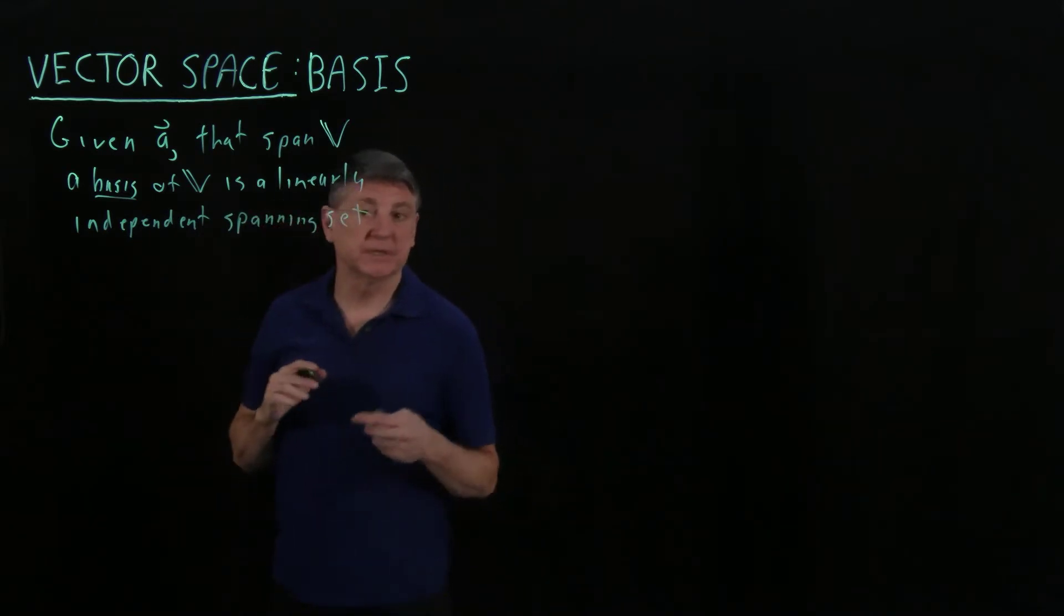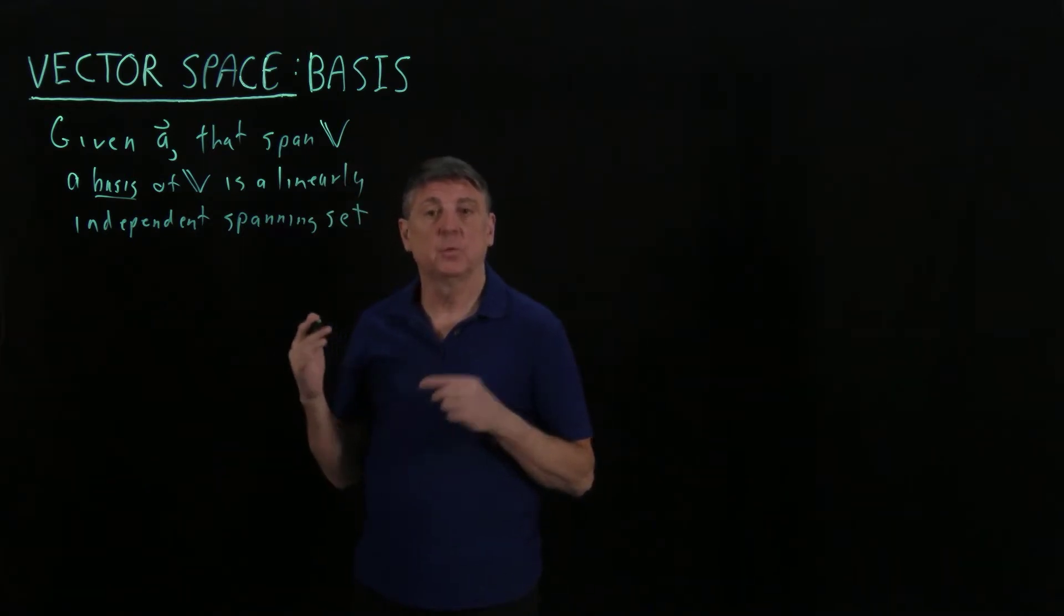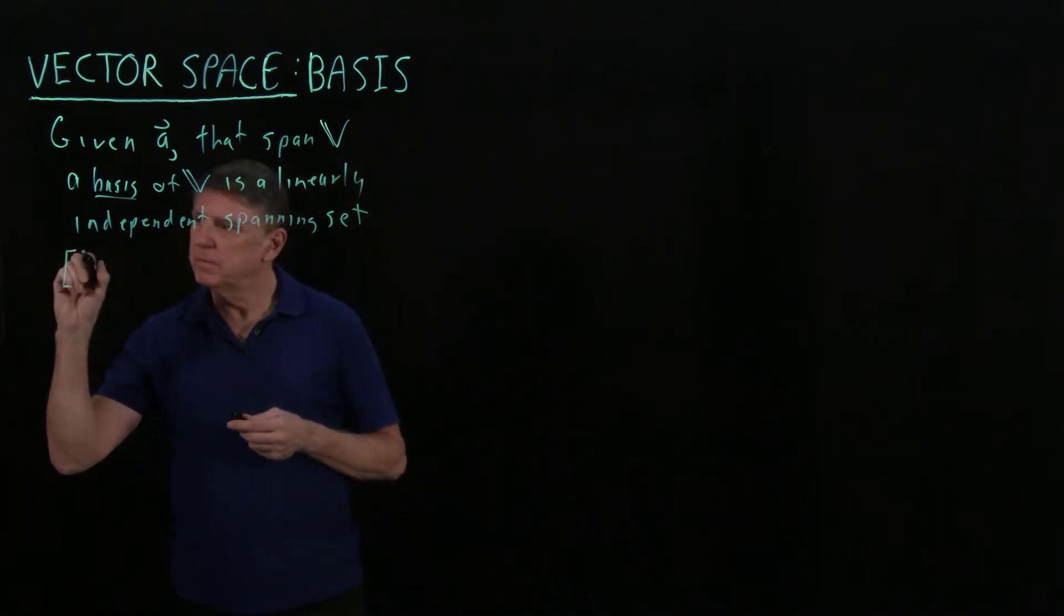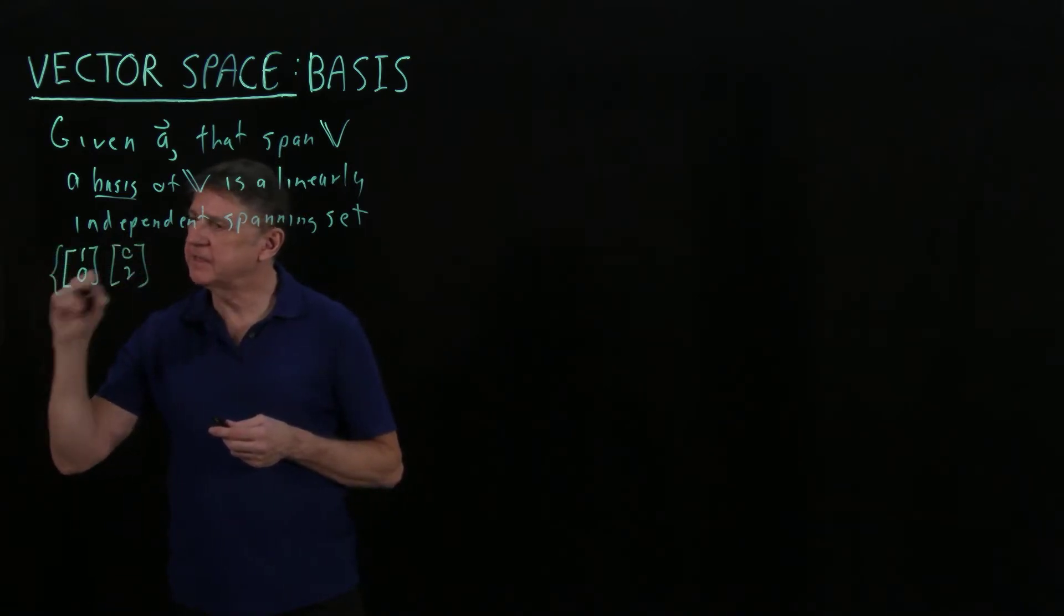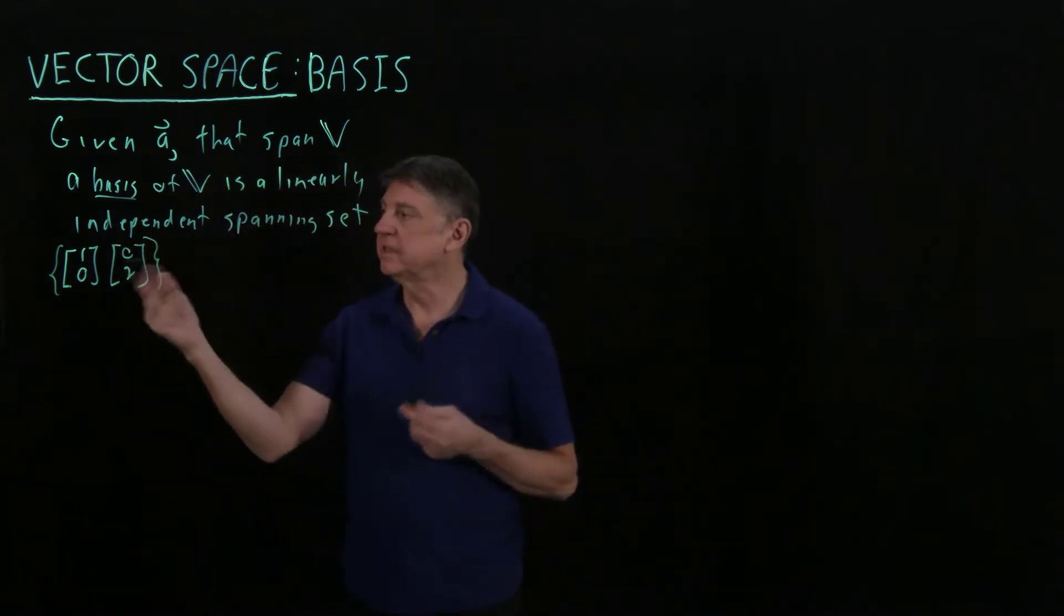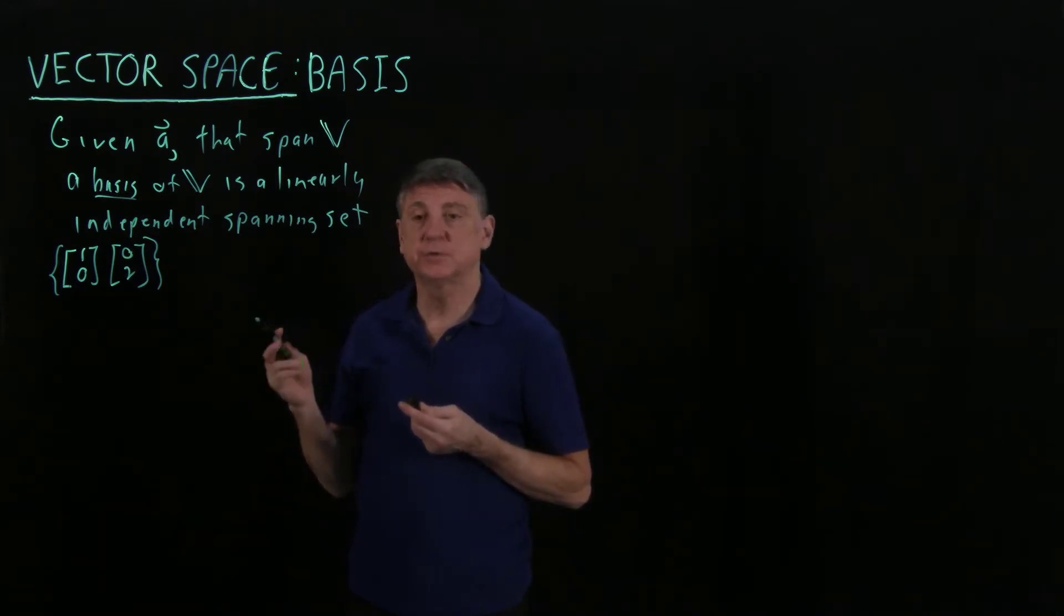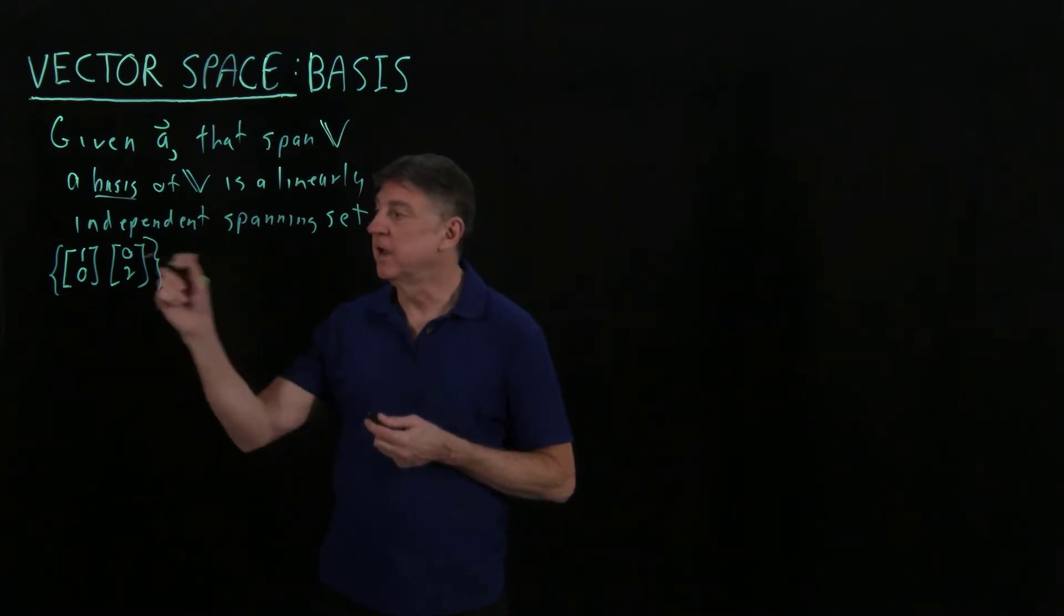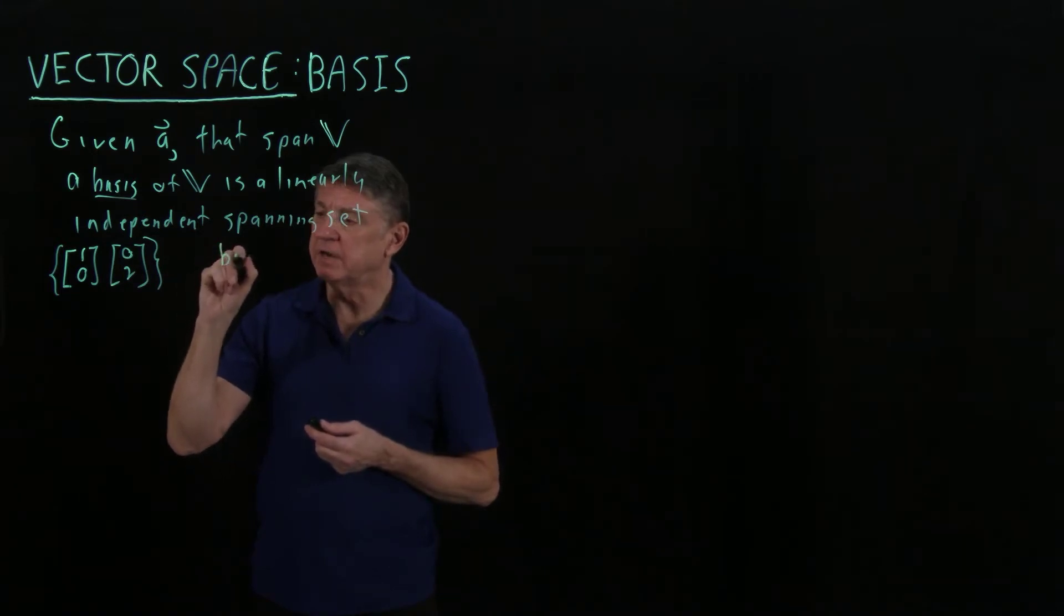Let's go through some simple examples and determine whether they're linearly independent and therefore whether they're a basis. Suppose we have vectors [1, 0] and [0, 2]. Are these linearly independent? With two vectors, linear independence is relatively easy to establish because all we have to determine is whether they're scalar multiples of each other. They're not, so these are not scalar multiples, so that means they are a basis.